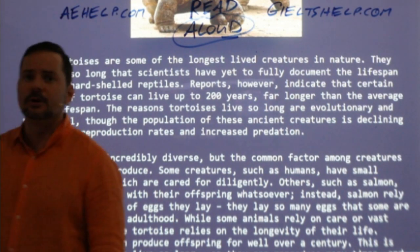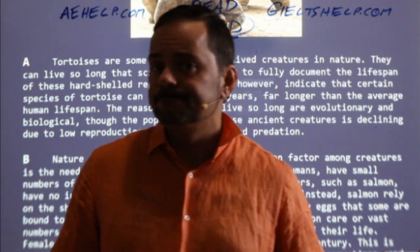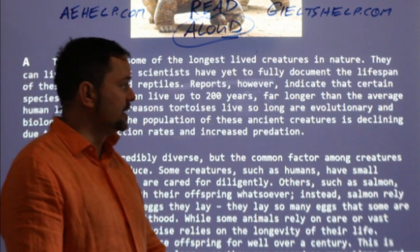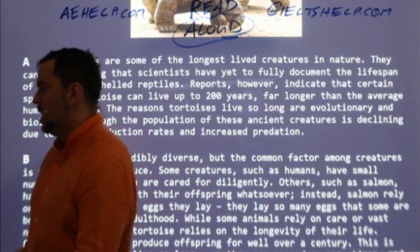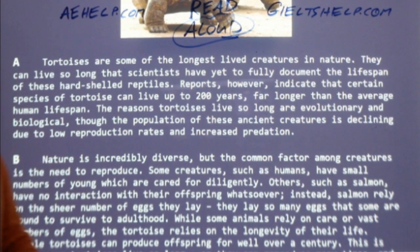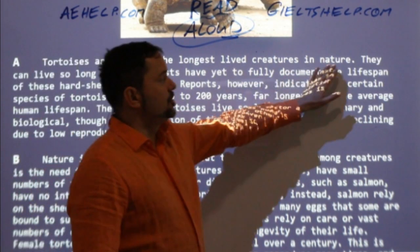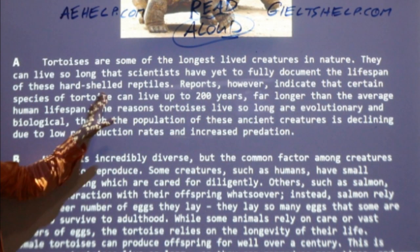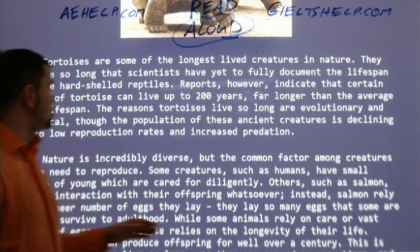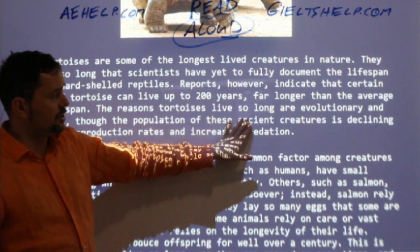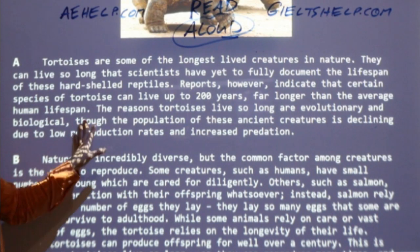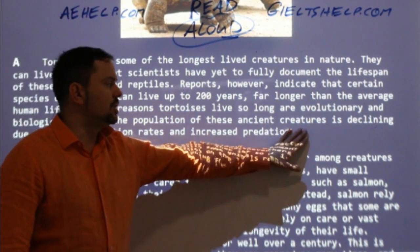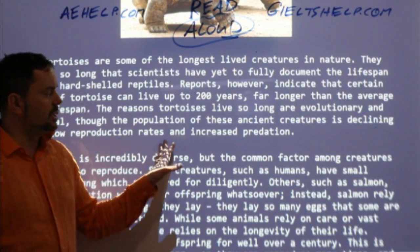Nice comfortable speed. You have about 10 minutes for a reading passage and then 10 minutes to answer the questions. Here we go everyone, read with me. 'Tortoises are some of the longest lived creatures in nature. They can live so long that scientists have yet to fully document the lifespan of these hard-shelled reptiles. Reports indicate that certain species of tortoise can live up to 200 years, far longer than the average human lifespan. The reason tortoises live so long are evolutionary and biological, though the population of these ancient creatures is declining due to low reproduction rates and increased predation.'